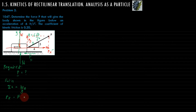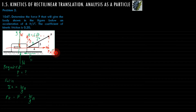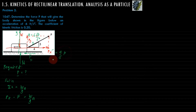So this equals W over g times a. The unknown is force P, so we solve in terms of P. From the given figure, Px equals 4 over 5 times P.